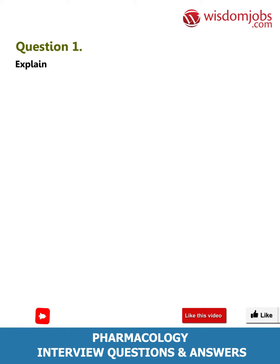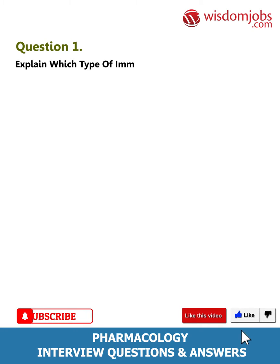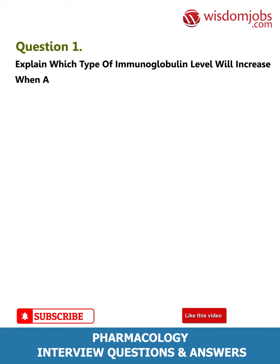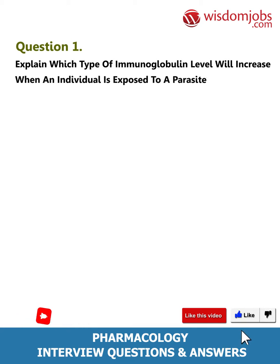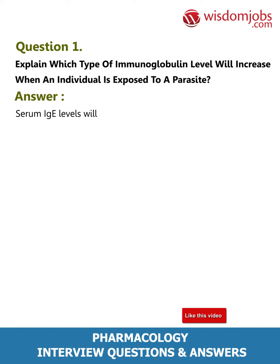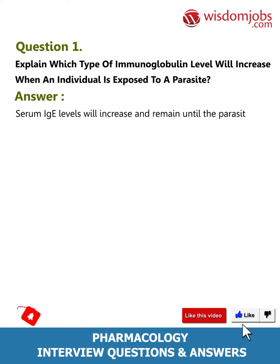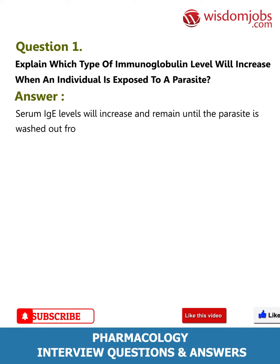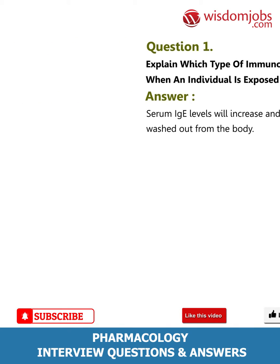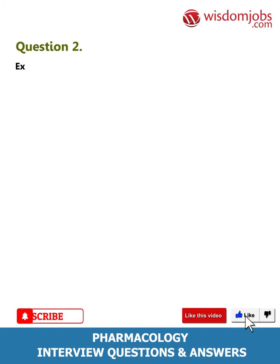Question 1: Which type of immunoglobulin level will increase when an individual is exposed to a parasite? Answer: Serum IgE levels will increase and remain until the parasite is cleared from the body.